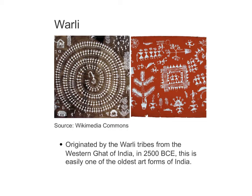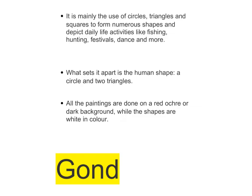Warli painting mainly uses circles, triangles, and squares to form numerous shapes depicting daily life activities like fishing, hunting, festivals, dance, and more. What sets it apart is the human shape — a circle and two triangles. All these paintings are done on a red ochre background, and the shapes are drawn in white.